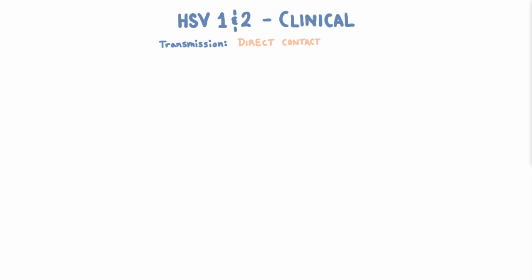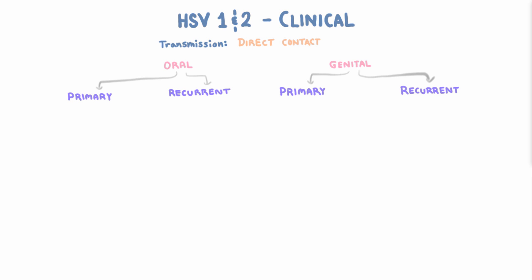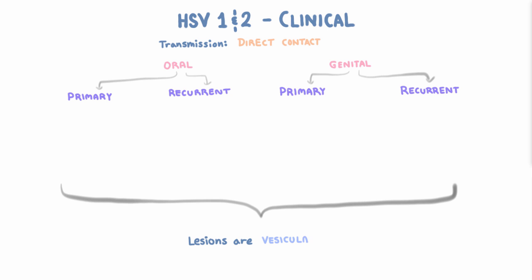When we say HSV causes mucocutaneous lesions, what exactly does that mean? The herpetic lesions are usually vesicular — vesicles are small, raised lesions that are filled with clear fluid. They can unroof or rupture, in which case they ulcerate. As you can imagine, that can be quite painful.